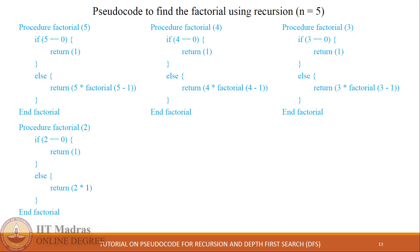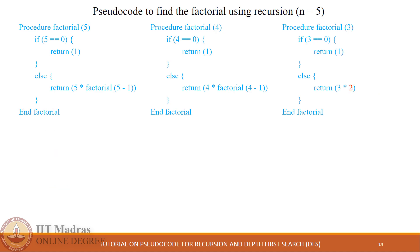Now 2 multiplied by 1 is computed and the result is returned back to its previous procedure call. The same thing continues: 3 multiplied by 2 gives 6, which is returned back to its previous call.